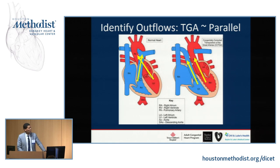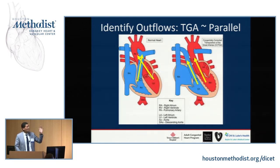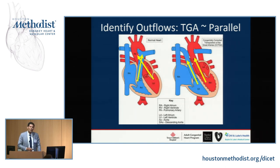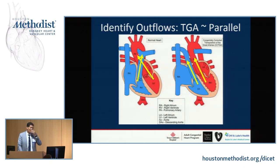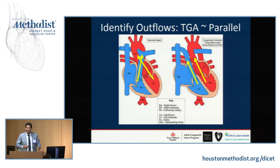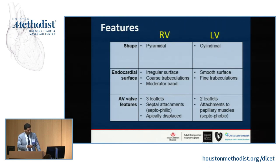As Dr. Brzezinski mentioned, the spaghetti and meatballs concept — these two great vessels are in parallel, and you're not supposed to see that. They're supposed to be crossed normally. So for the fellows: if you see great arteries that are in parallel, it's some kind of transposition, either L or D.